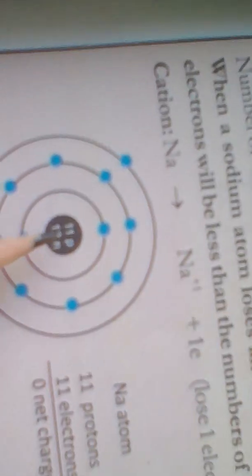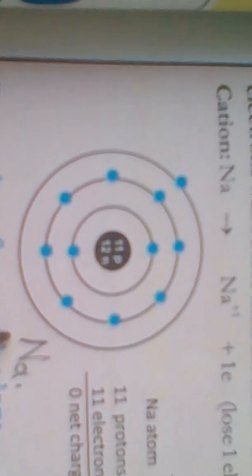This is the atomic structure of sodium. We call it Na, a symbol derived from the Latin word Natrium.